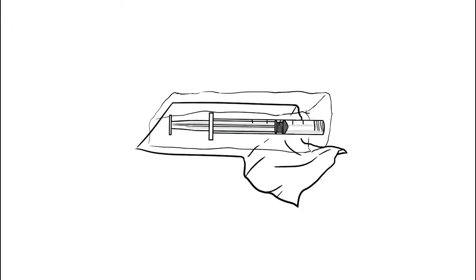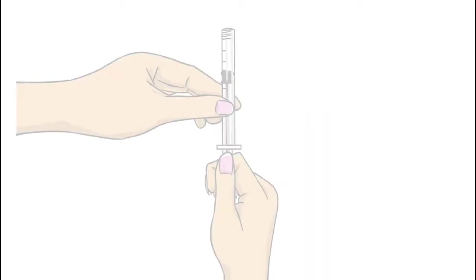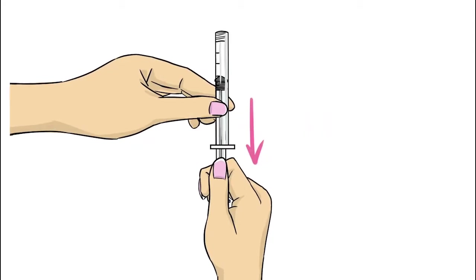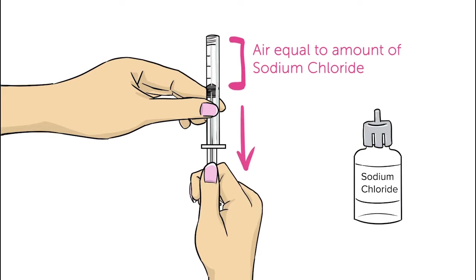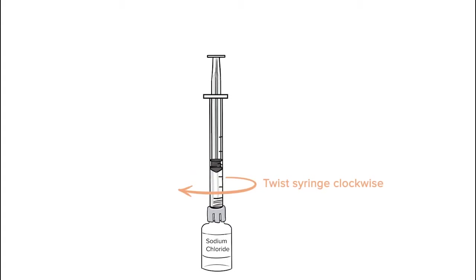Remove the syringe from its packaging and do not touch the syringe tip. Pull out the syringe plunger rod to draw enough air into the barrel that is equal to the amount of sodium chloride your doctor instructed you to use. Without touching the syringe tip, place it into the connector end of the Q-Cap and twist the syringe clockwise until it is tight.